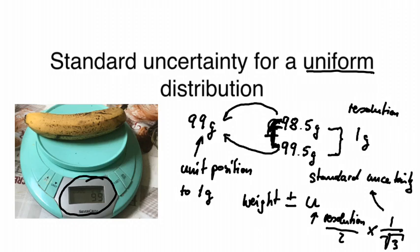So we can say for our weight plus minus the uncertainty, we've got the weight plus minus resolution divided by 2 times 1 over square root 3. So in our case we can now report the weight of the banana plus minus the standard uncertainty.